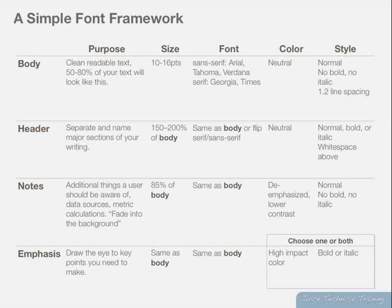Lastly, emphasis. We want to draw the eye. The size is the same as the body and so is the font, but we're going to choose one or both of a high-impact color or make the text bold or italic. So we might choose a bold red for emphasis text, or just italics, or some combination of color and italics.